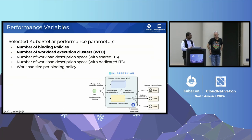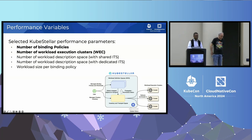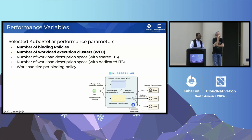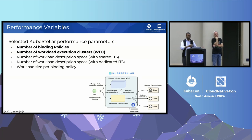In a multi-cluster environment, there are many tuning parameters you can configure. It's very important to define and select performance variables that you want to analyze, chosen based on the current risks of your application. For KubeStellar, we selected several performance variables. In this talk, I'll focus on two: the number of binding policies and the number of workload execution clusters. The next slides show three experiments focused on those two performance variables and the lessons learned.